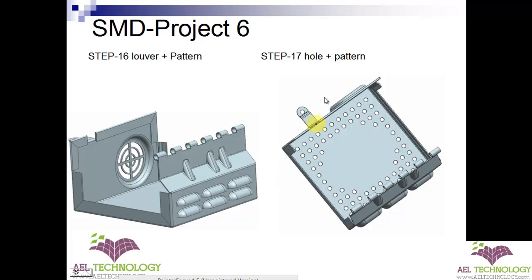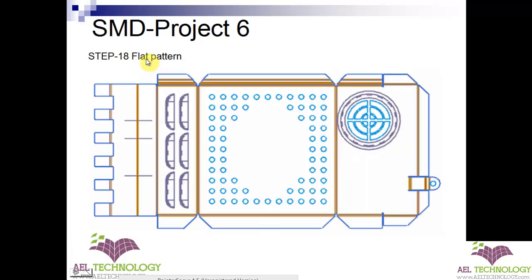After that is done, we will create a hole array. You can see that in the center area there are no holes — we deleted those instances during the pattern feature to get this profile. Once that is done, we will create a flat pattern. I will explain how to do this part in UGN X10.